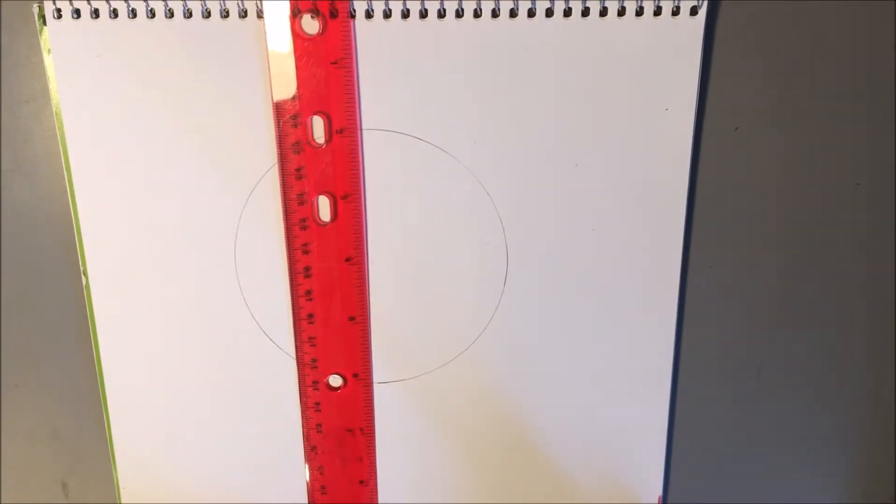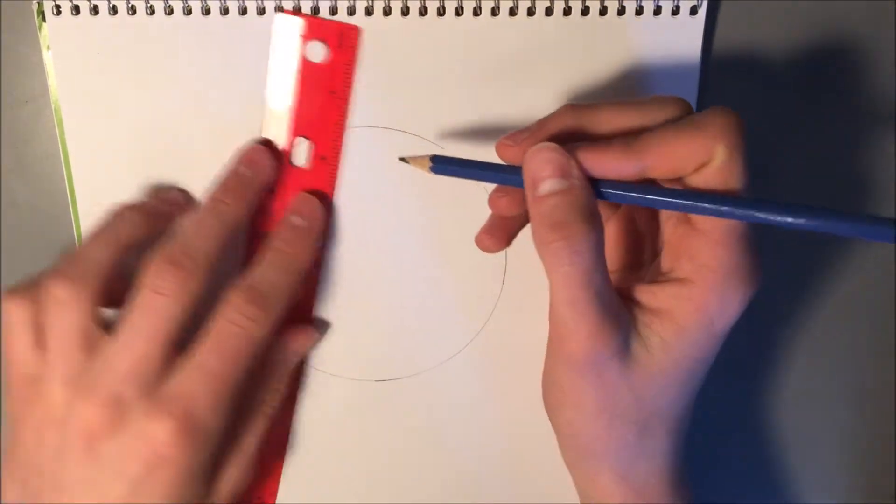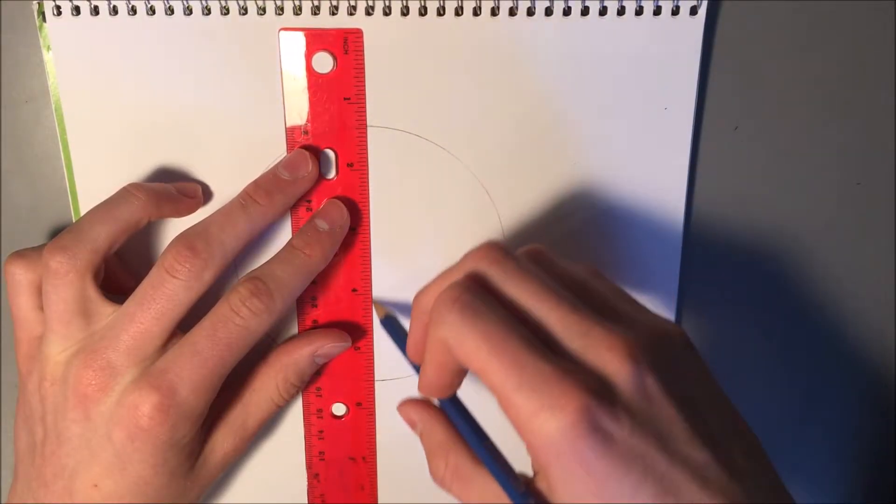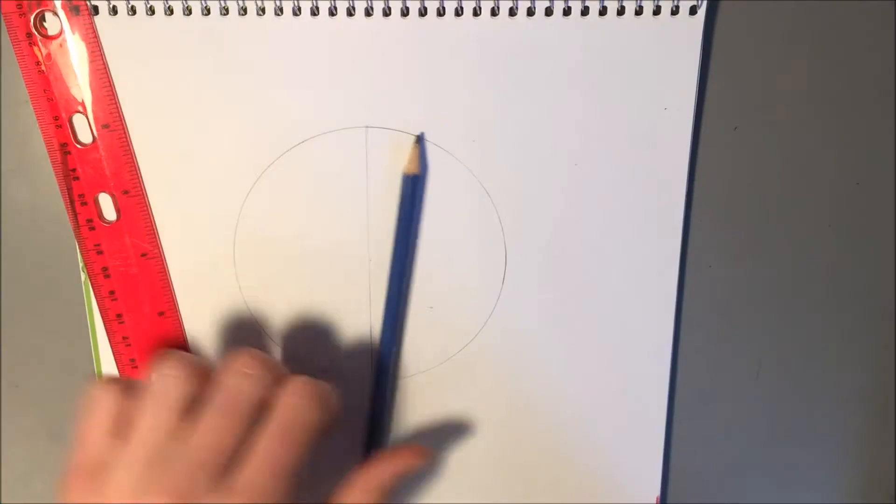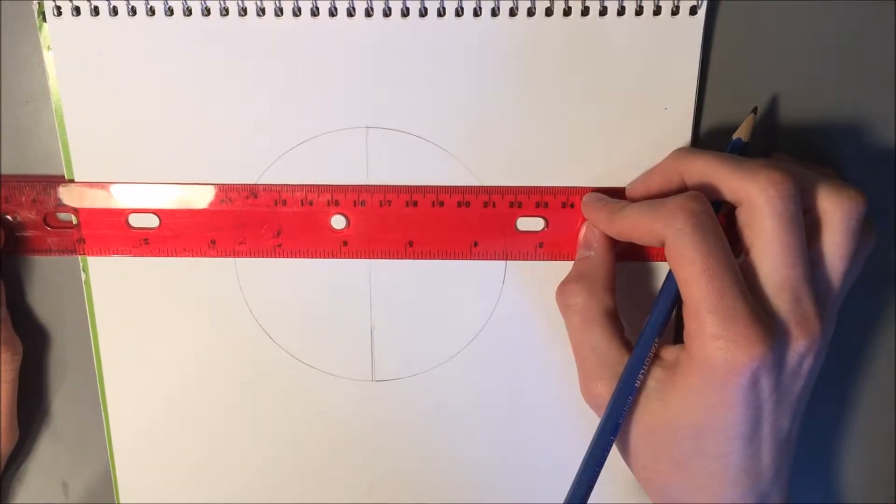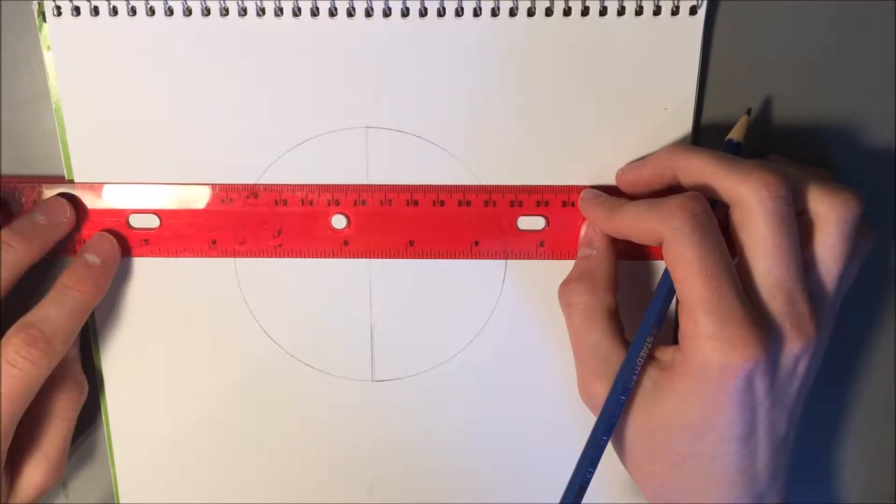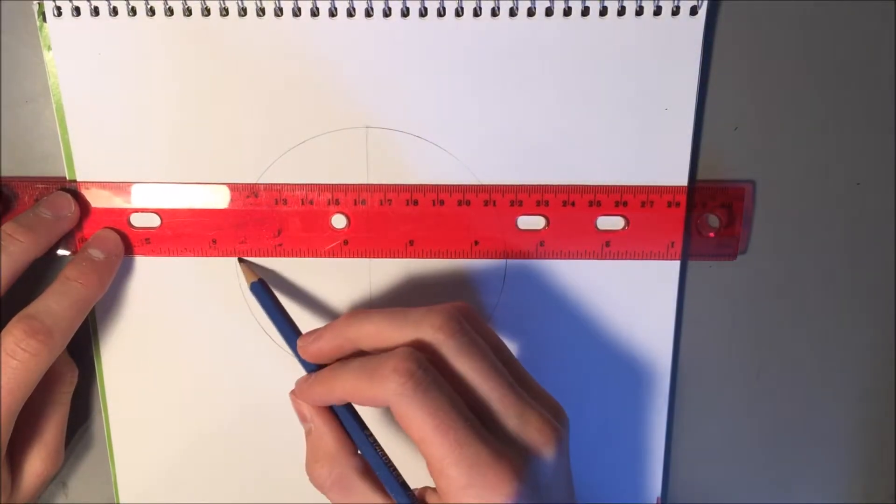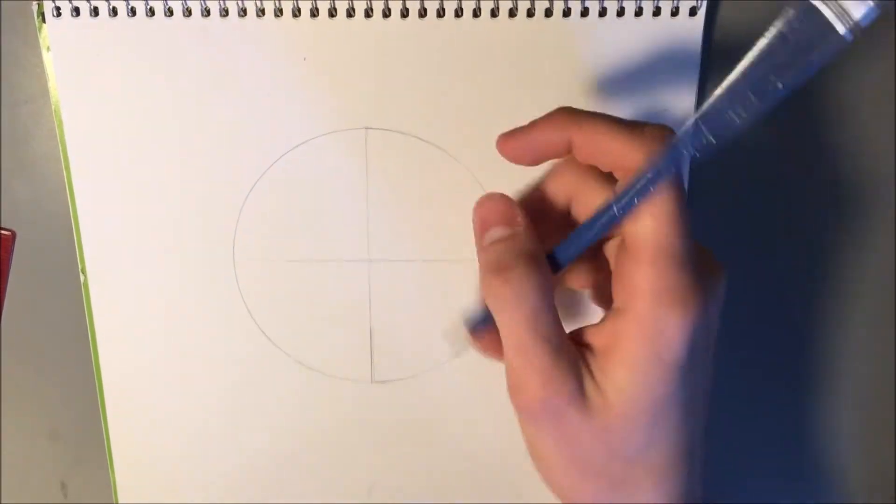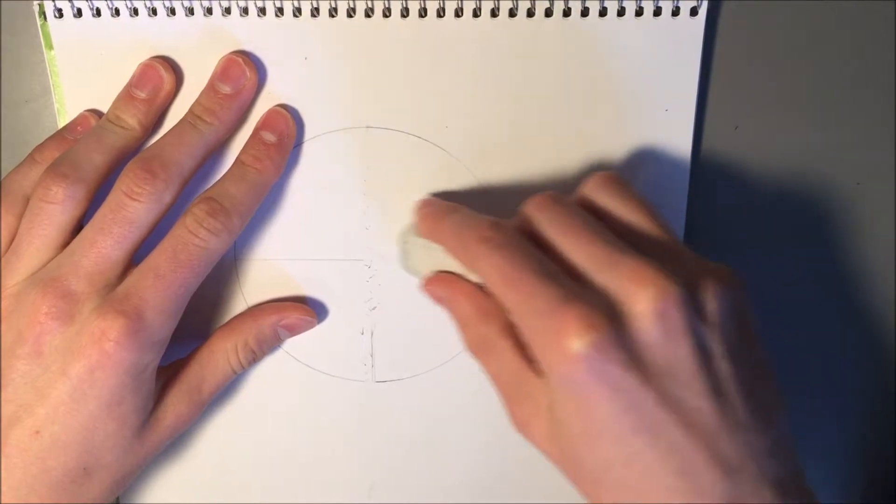Now you want to draw a vertical line and a horizontal line going through the center of the clock. Try and make those lines as light as possible - they're only guidelines.